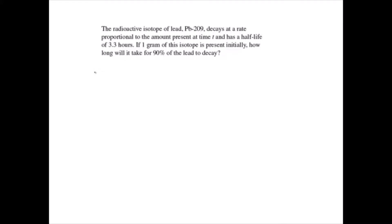The radioactive isotope of lead, PB-209, decays at a rate proportional to the amount present at time t and has a half-life of 3.3 hours. If one gram of isotope is present initially, how long will it take for 90% of the lead to decay?